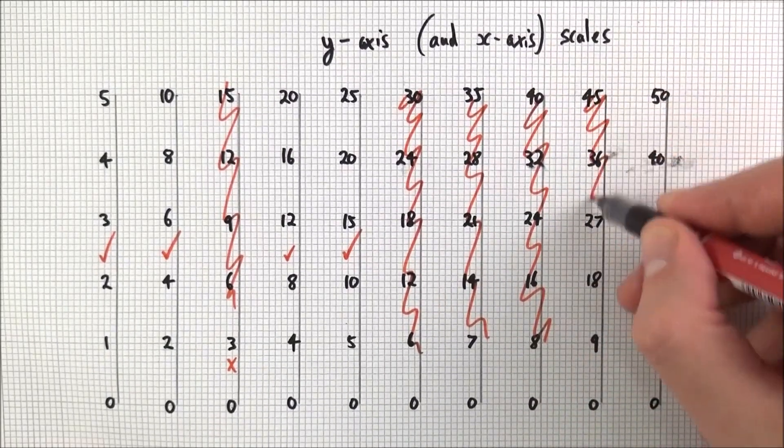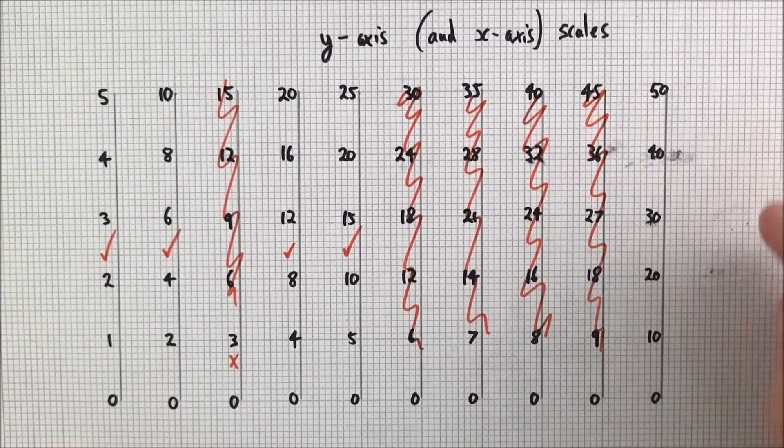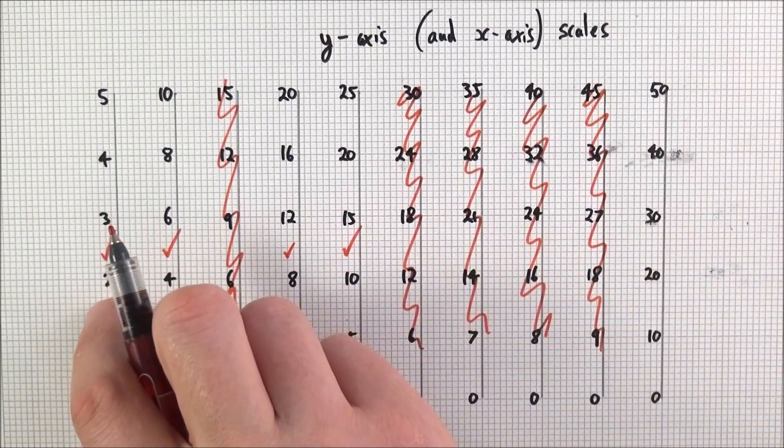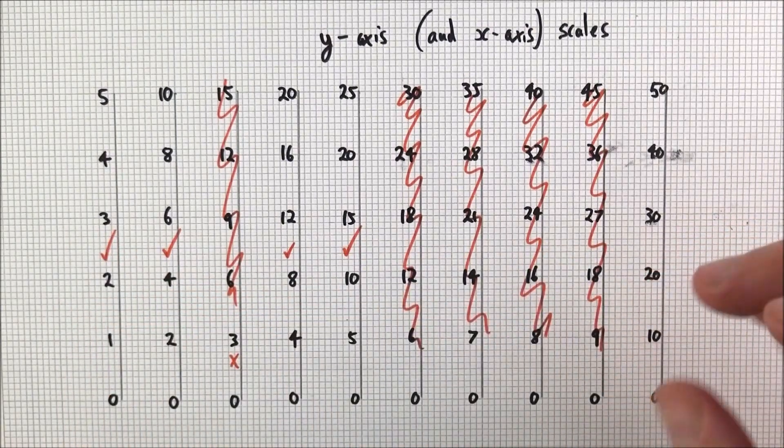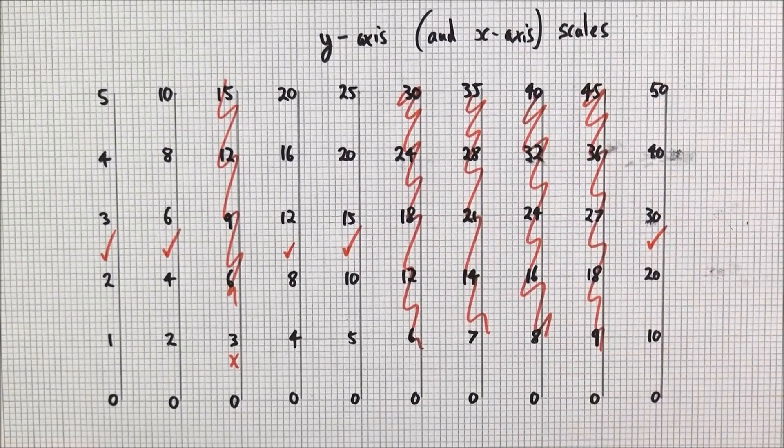When it comes to going up in 10's, so 0, 10, 20, this one here is just the same as the scale here but all that's happened is it's been multiplied by 10. So again this is appropriate.